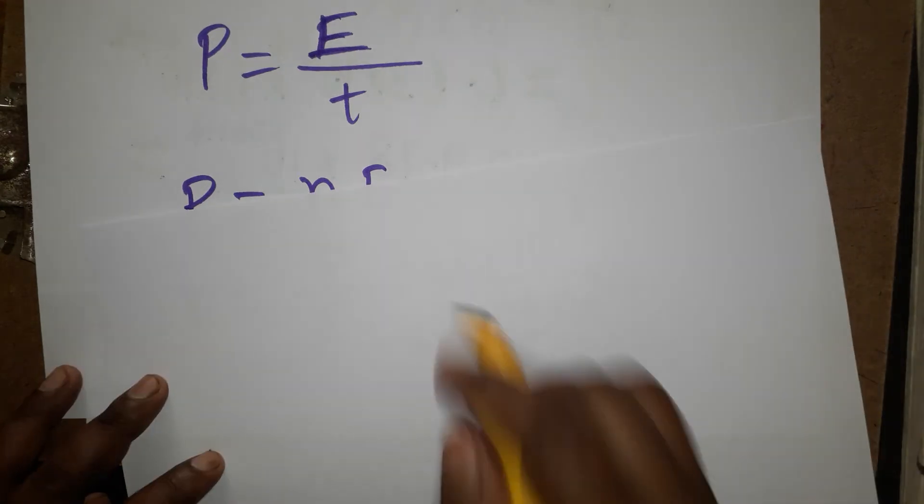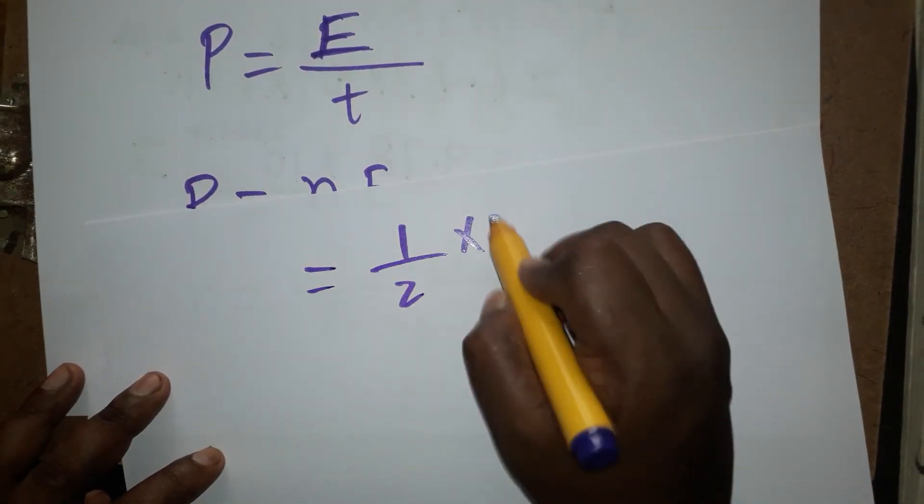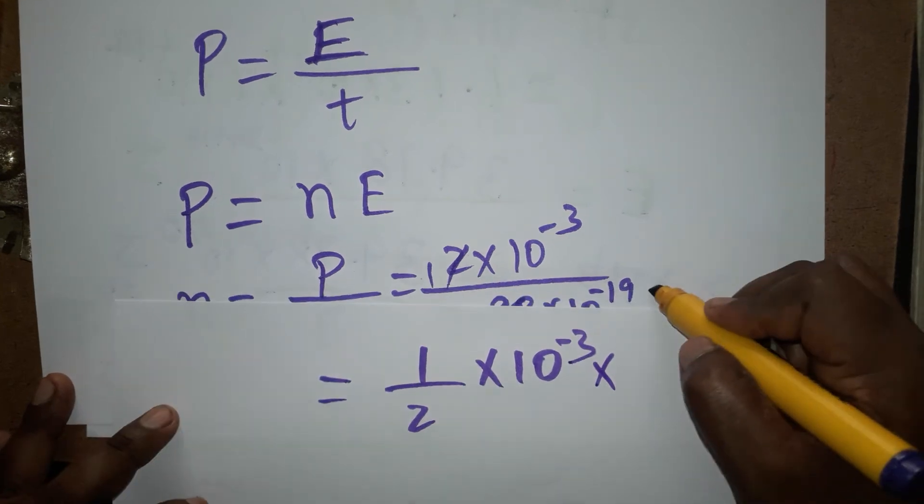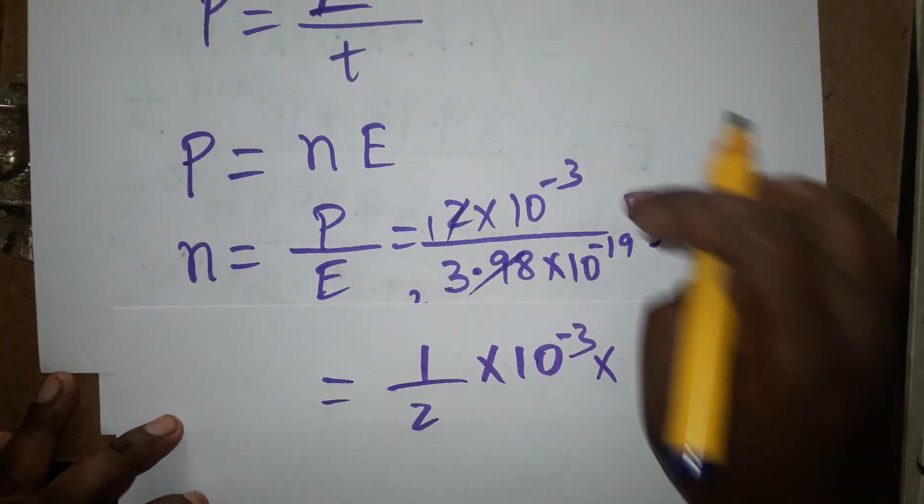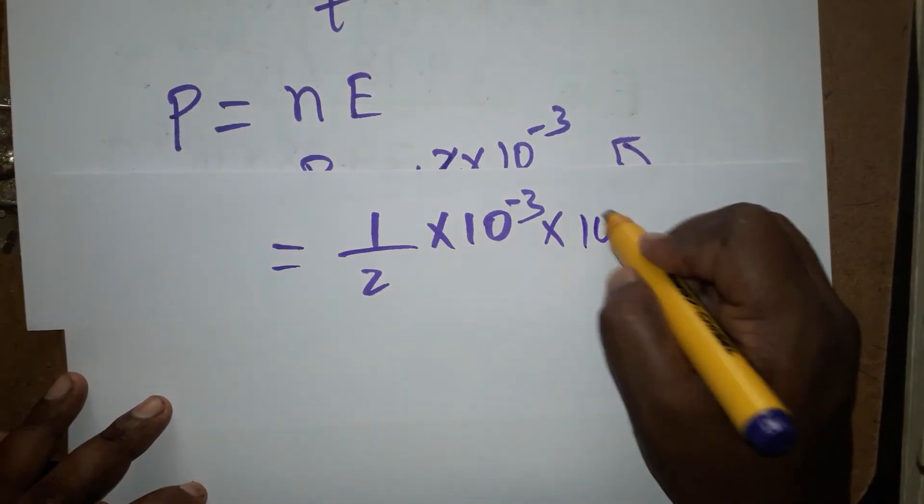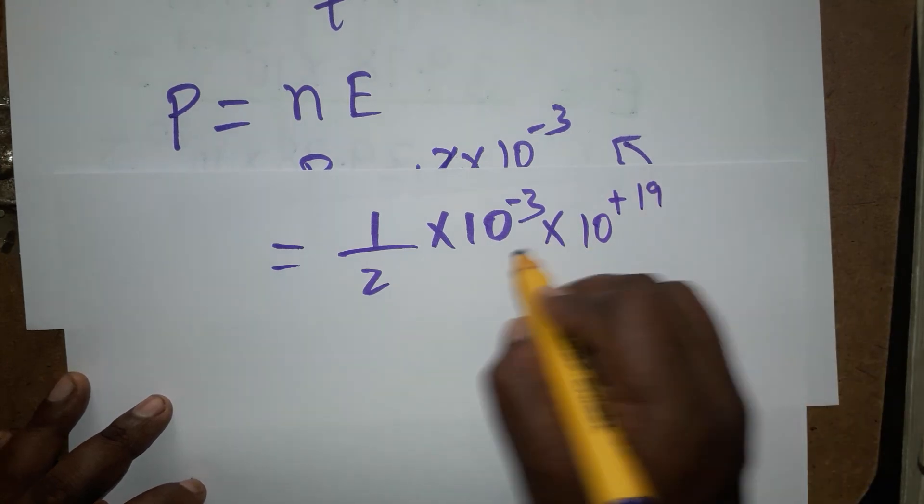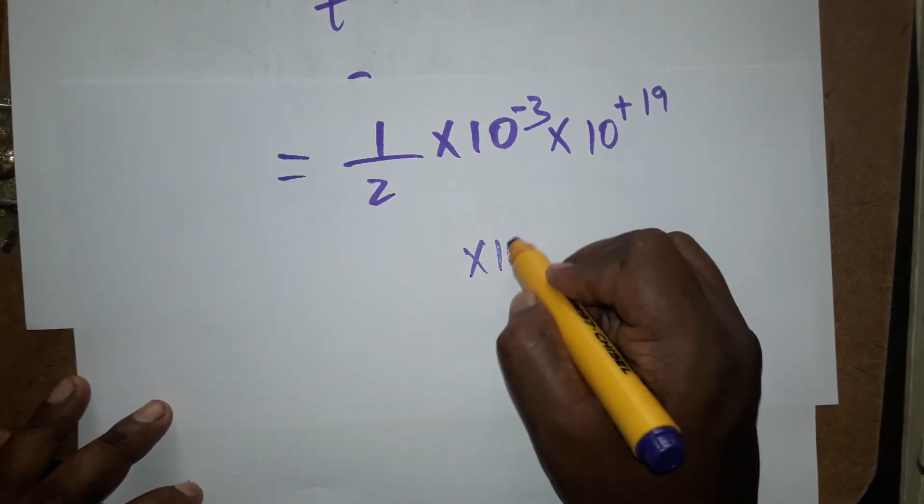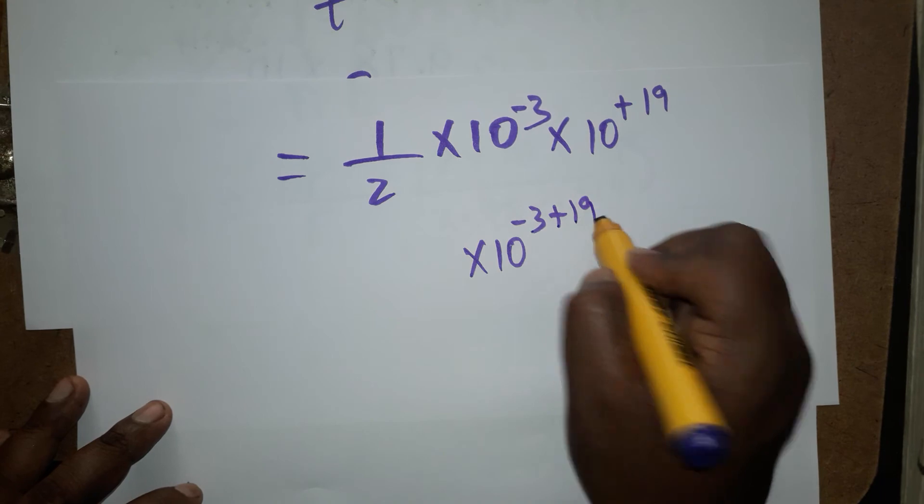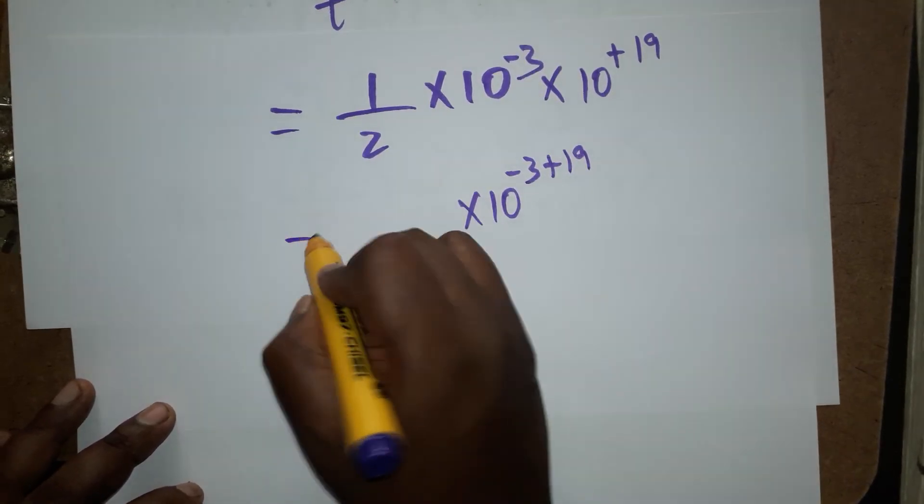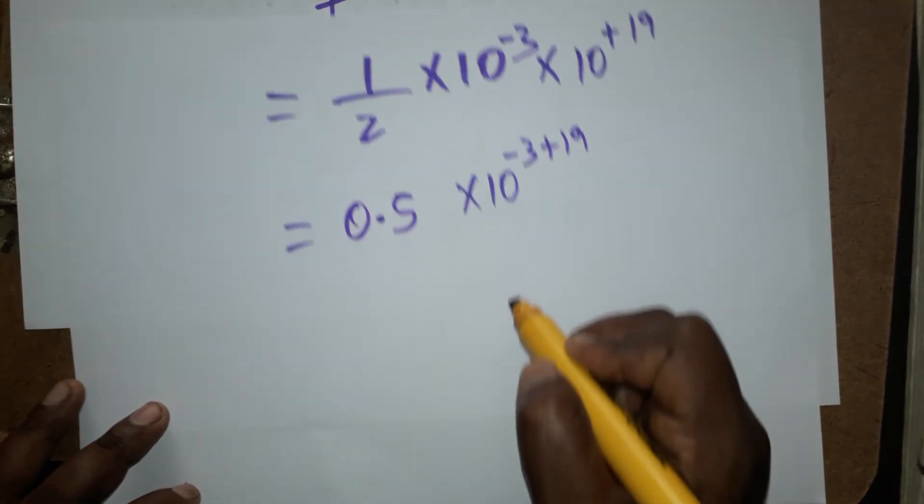The next step: 1 divided by 2 into 10 power numerator minus 3, denominator minus 19. From denominator if taken as numerator it becomes plus 19. This will get 10 power minus 3 plus 19, the answer will be plus 16. 1 by 2 is 0.5.